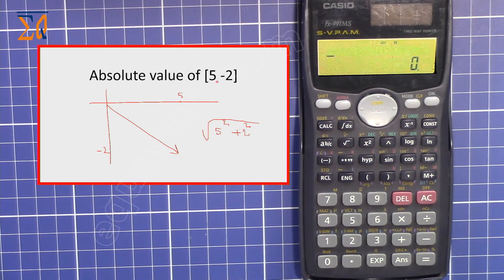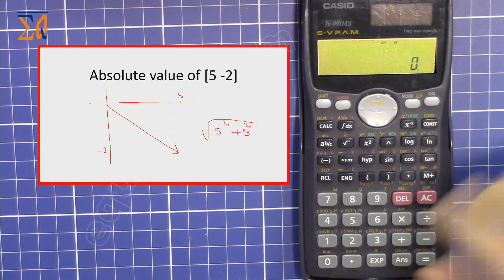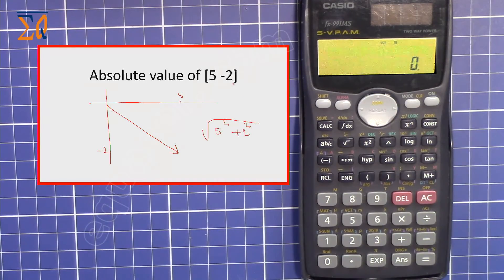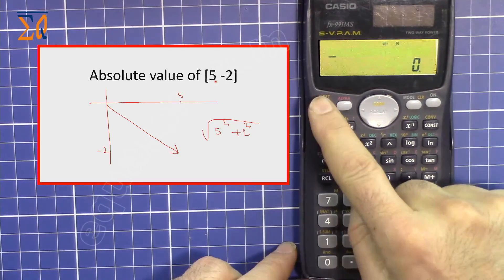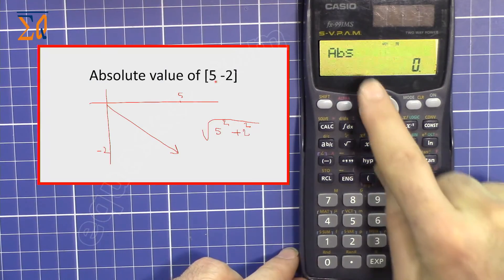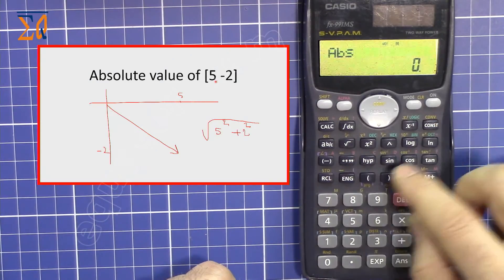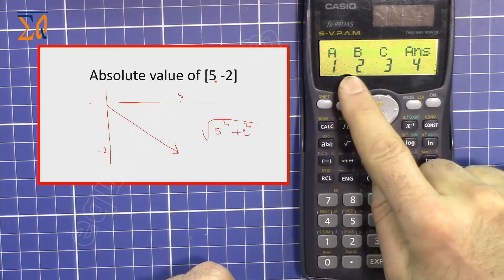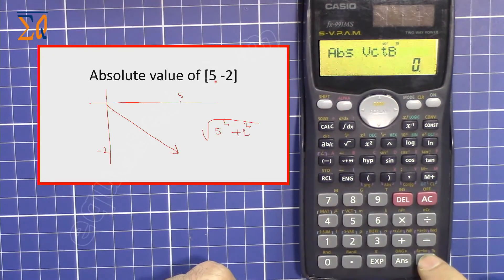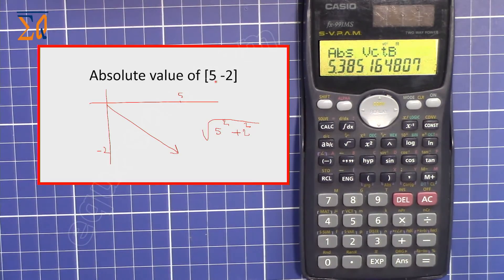Now let's get the magnitude or absolute value of a vector. For example, vector B is [5, -2]. You could use the Pythagorean theorem — square root of 5² plus 2² — but on the calculator it's easy. Press SHIFT then ABS, then SHIFT 5, then 3, then 2 to enter vector B. Press equals and you get 5.3851, which is the magnitude of vector B.